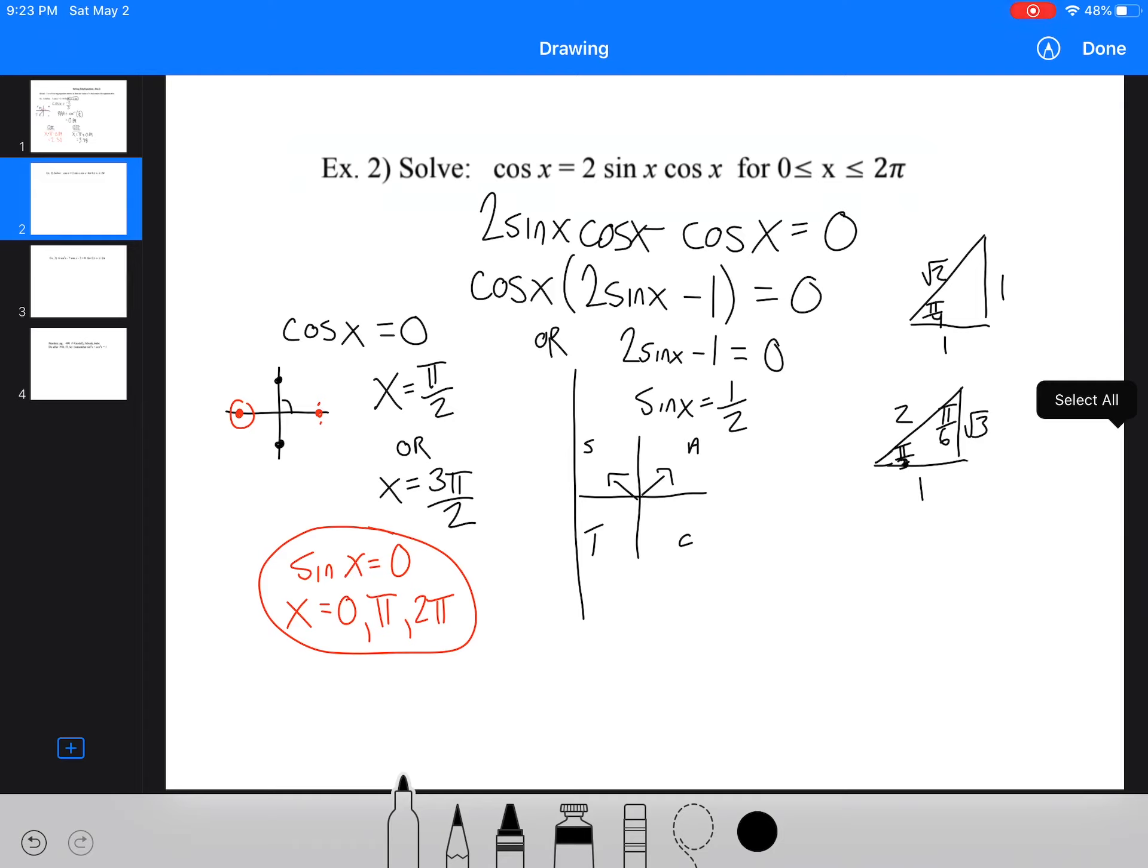The unit circles are something you should memorize. You should know them. But when we're looking at this, we now have sin 1 half. So that's 1 over 2. So that means my related acute angle is pi by 6. It's from this triangle to this angle, 1 over root 2, or sorry, 1 over 2.